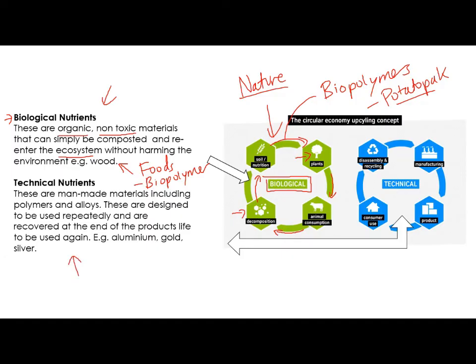There are always going to be some technical nutrients — this is the technical side — and what that means is man-made materials: things like plastics, alloys, metals, aluminium, gold, silver, different types of polymers. What happens is they are manufactured and used in the product, the consumer uses the product, and then it's returned for disassembly and recycling. Those materials are put back into the manufacturing cycle again — they are not thrown away, they are constantly kept in this loop.